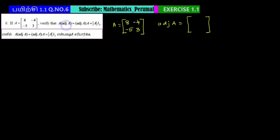We will find the adjoint of A. For a 2×2 matrix, to find the adjoint of A, we change the diagonal elements by transferring them.